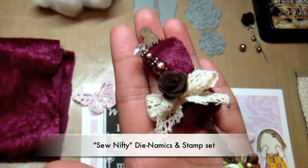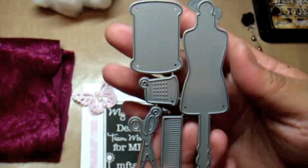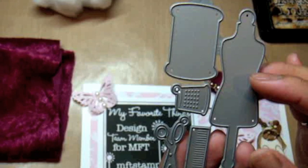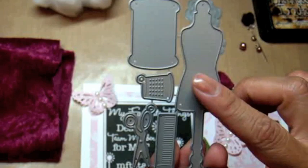The dress form from the set—this Dynamics set comes with the Sew Nifty Dynamics and Stamp set available on the MFT website. It comes with the dress form, a spool, a thimble, some cute little scissors, and the scissors and thimble have a little hole where you can stick some twine or hang it from your project. It also comes with this little ruler that has a little hole. Super cute.